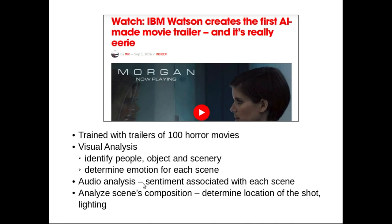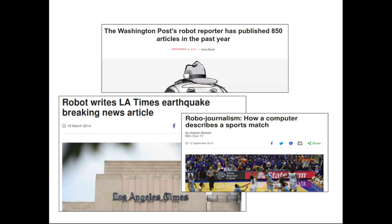So it's a computer program doing everything — that's IBM Watson creating a movie trailer. Then with advancement in natural language processing, more and more newspapers are using computer programs to write articles. For example, the Washington Post used a robot to write 850 of its articles.